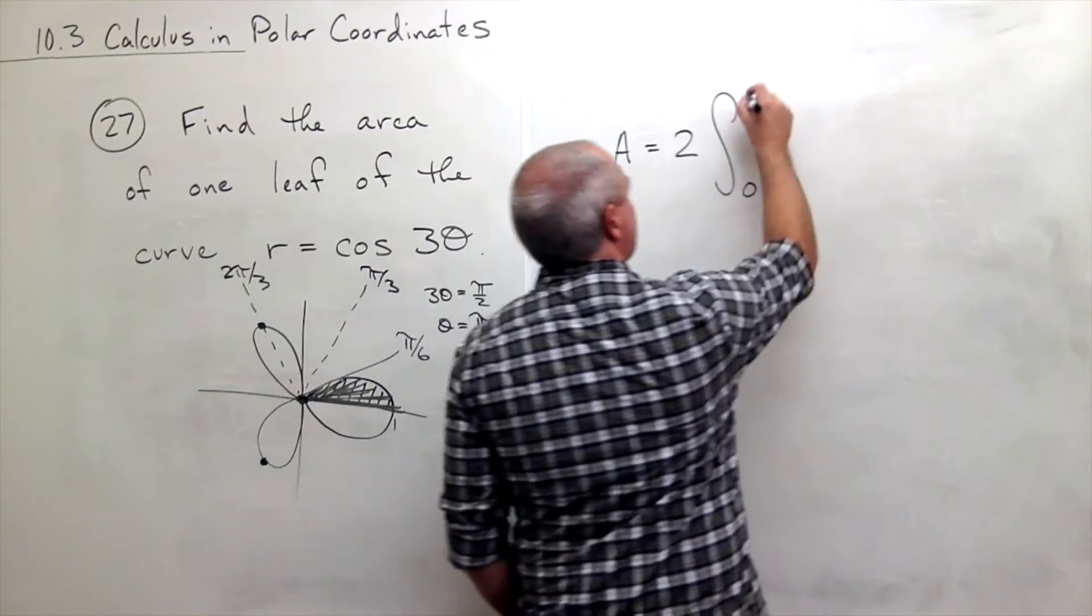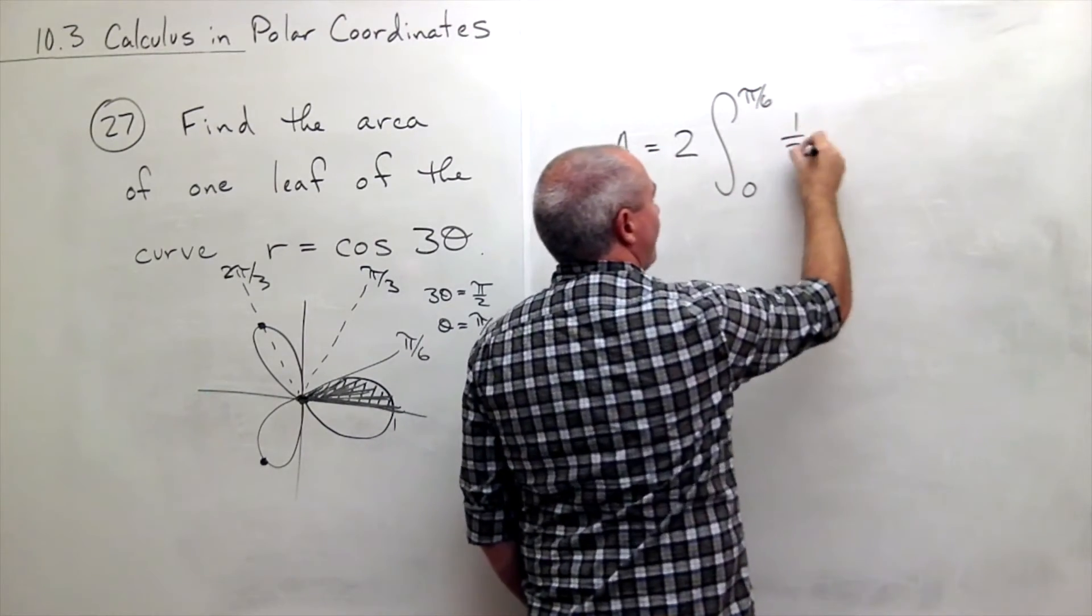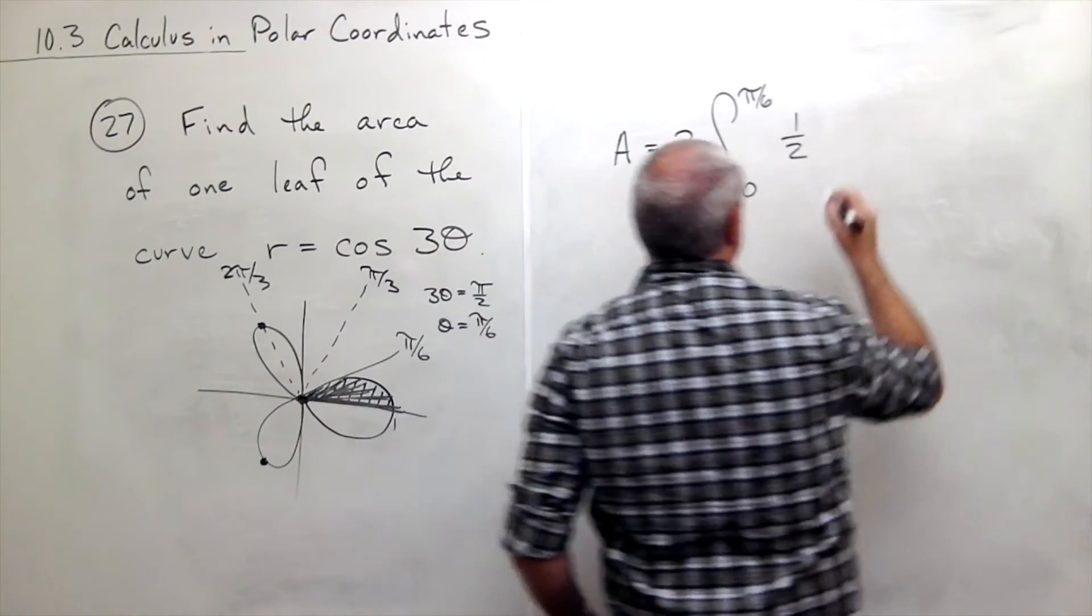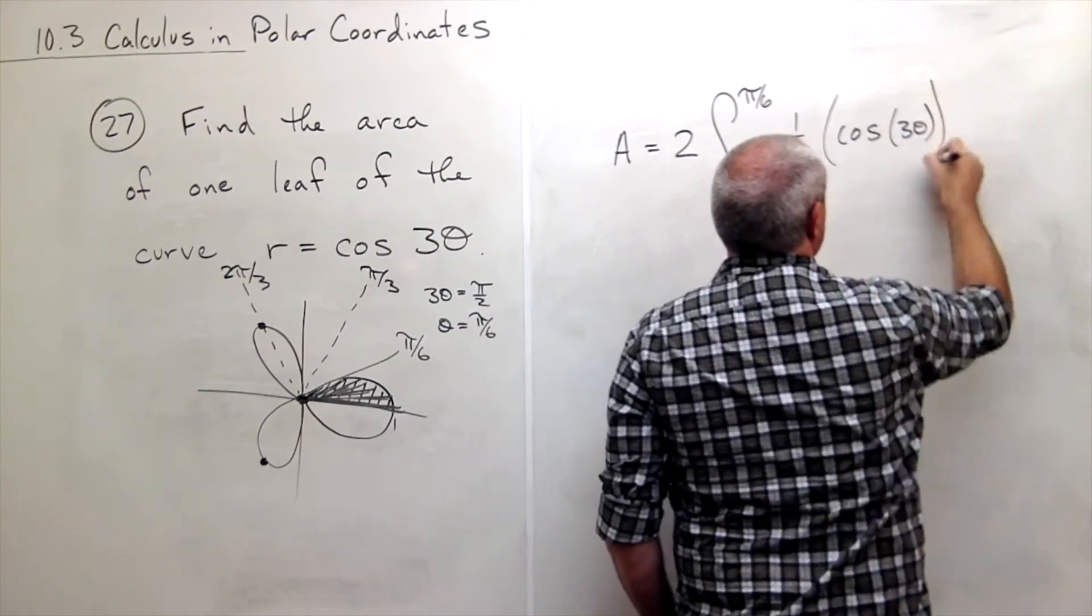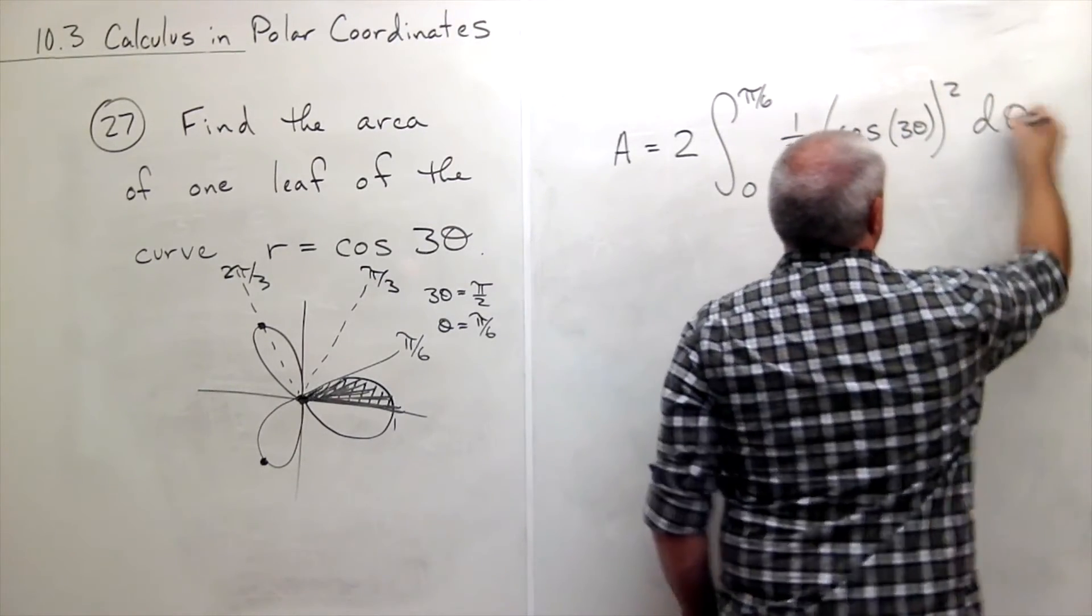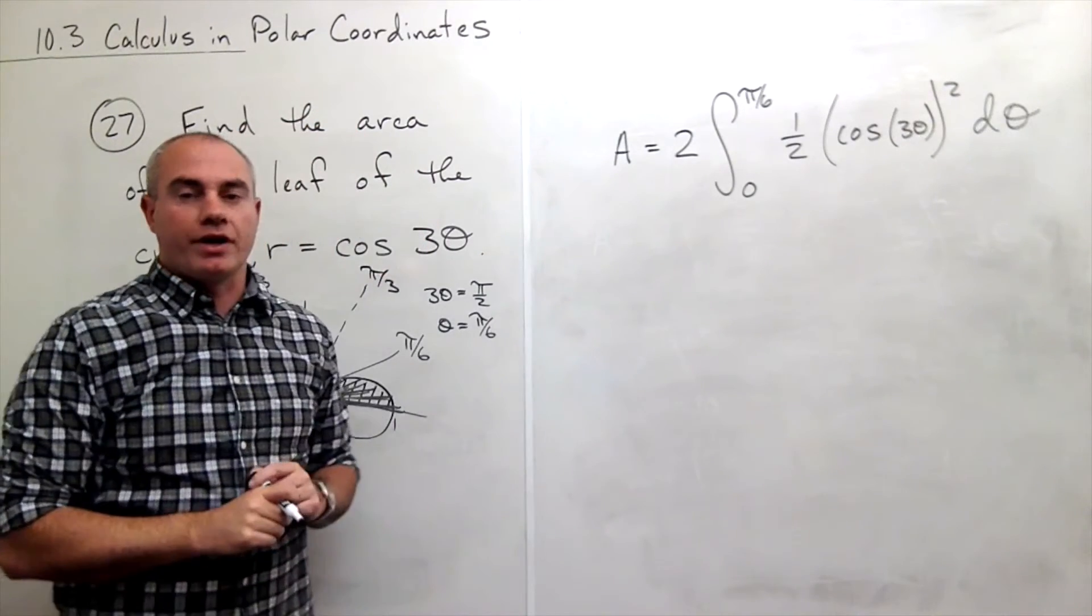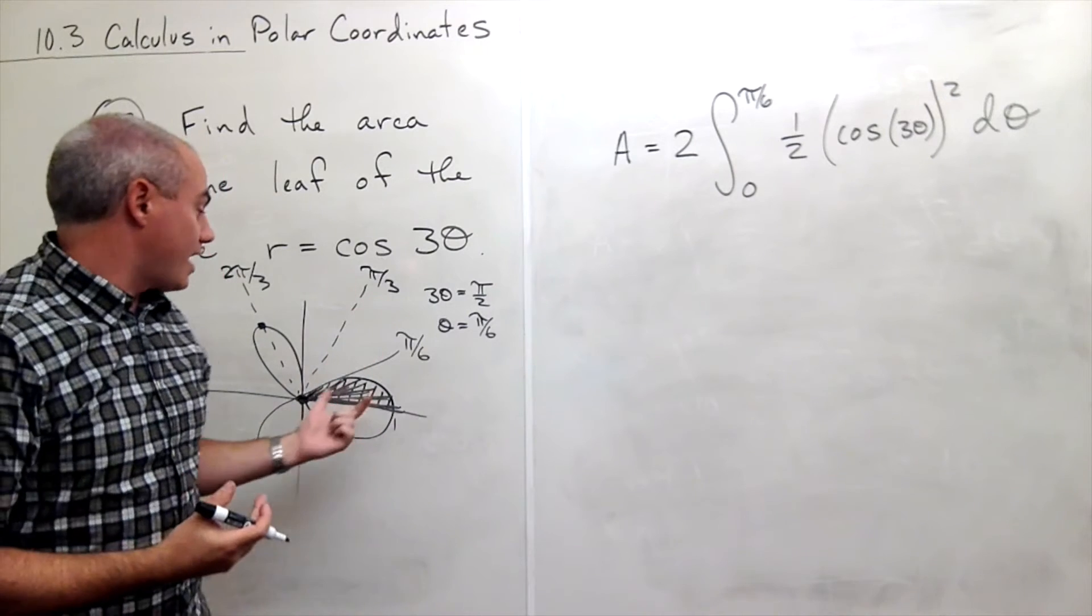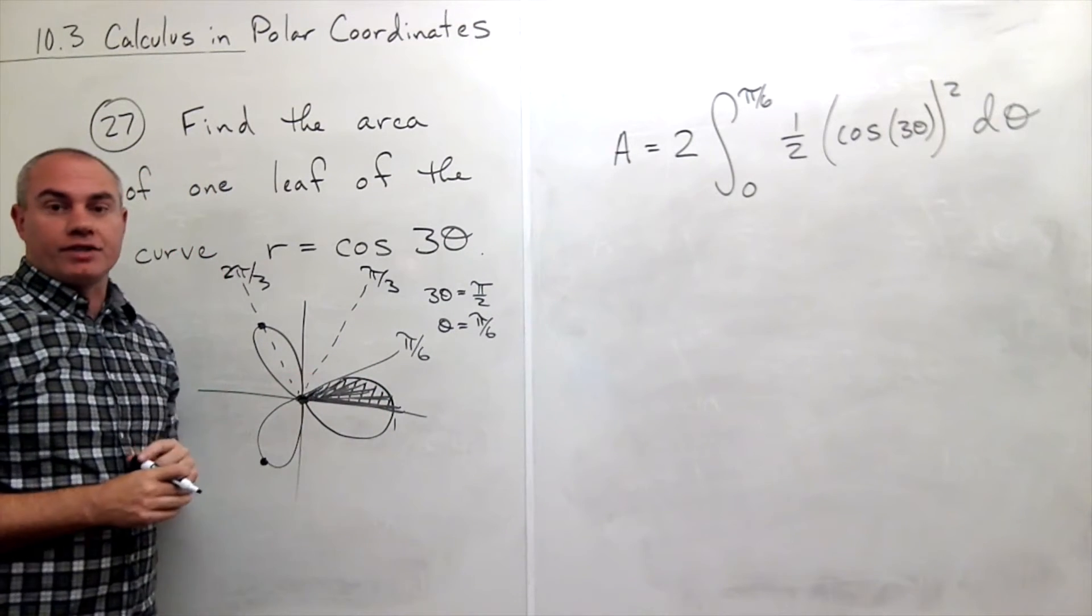So I'm integrating from zero to pi over six of one half r squared. R is cosine of three theta. So I want cosine of three theta squared d theta. So here is the integral that will get me the area that I'm looking for in this case the area in this one leaf of this curve.